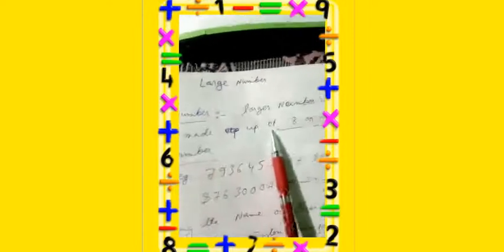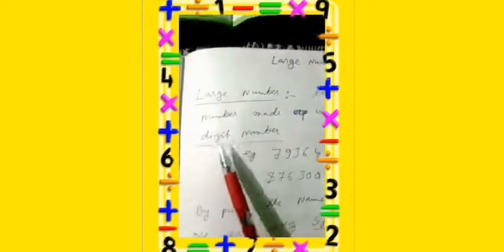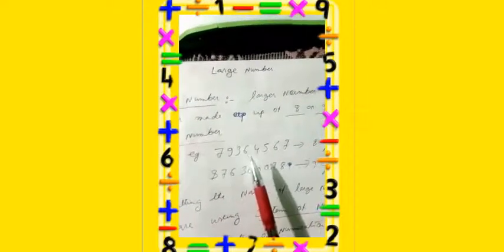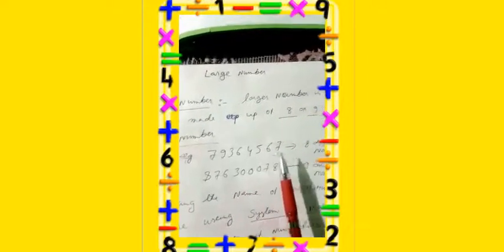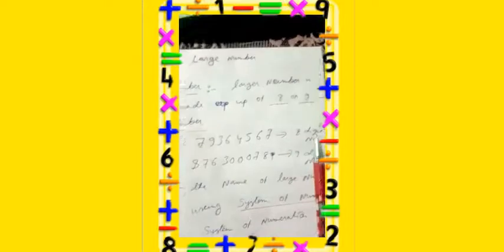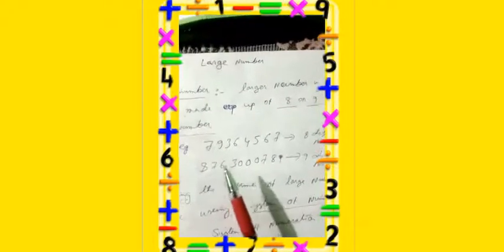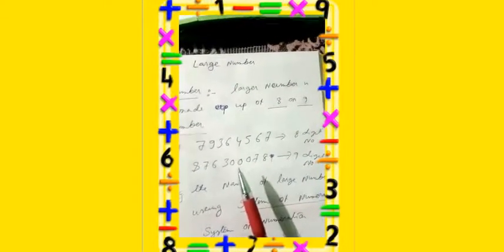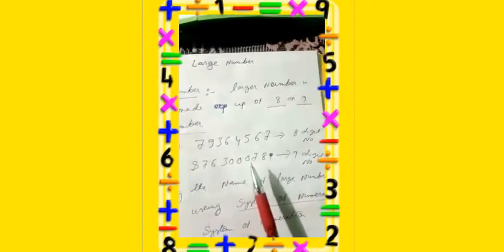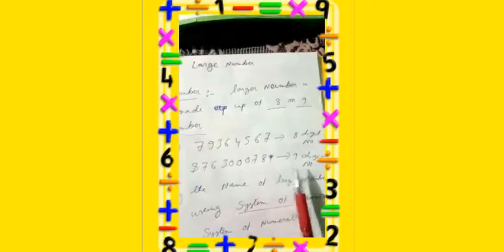Now in Class 5, we call 8- or 9-digit numbers large numbers. For example, 79364567 is an 8-digit number. Again, 876300078 is a 9-digit number.